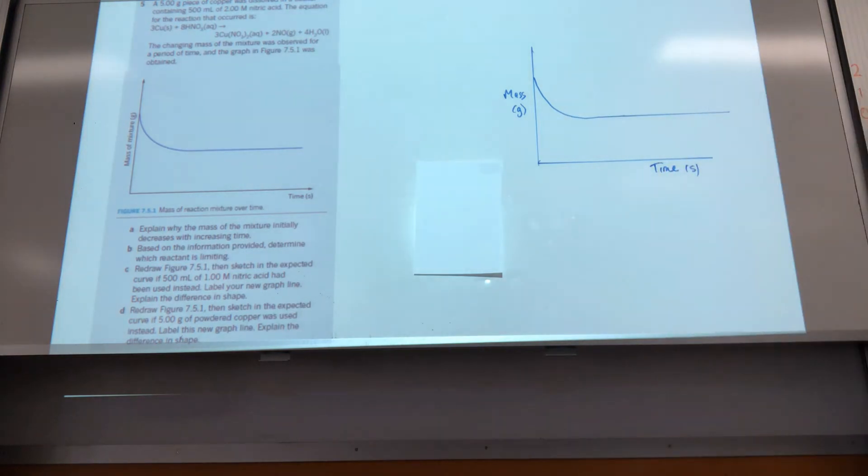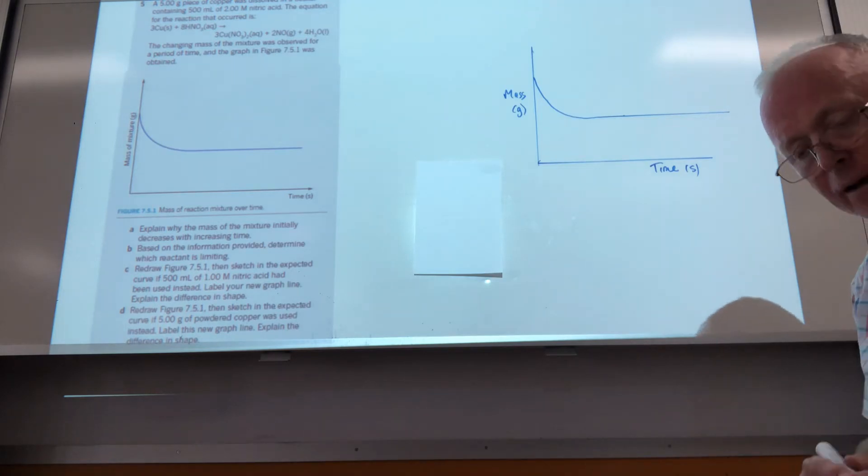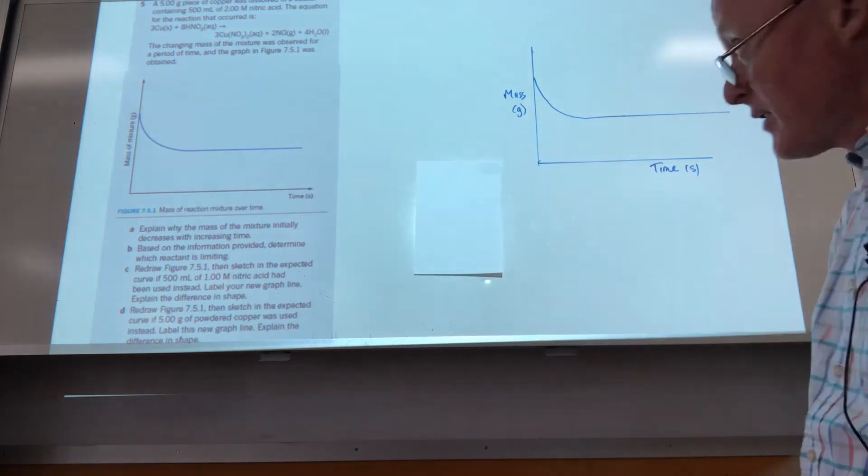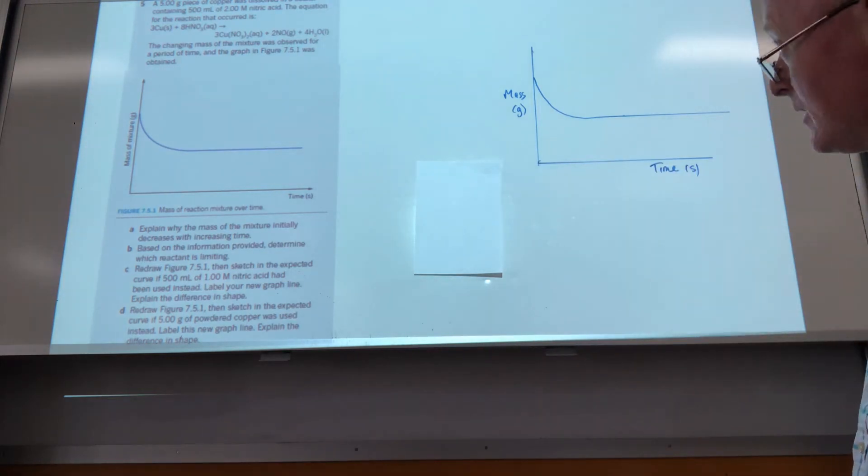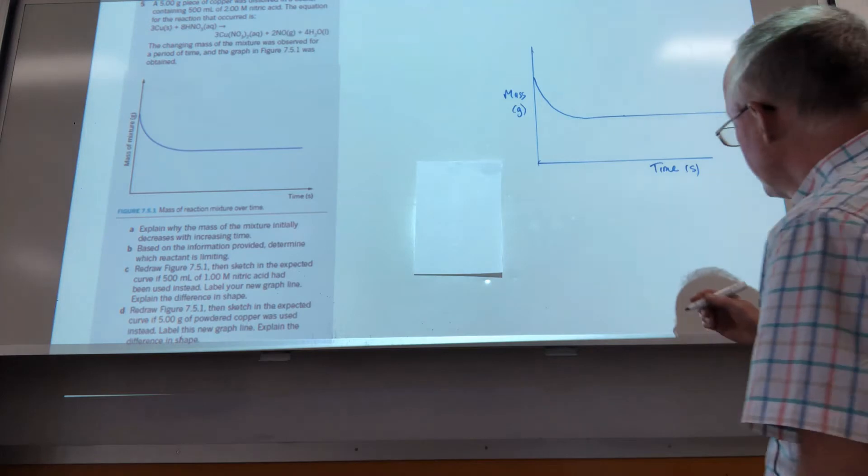And then once all the copper is consumed, no more nitric monoxide given off, so the mass stops decreasing. What we're asked, so I've basically just copied the graph on the left at this stage. Now we're going to show the effect of a lower concentration, of course it's going to slow down the rate of reaction.